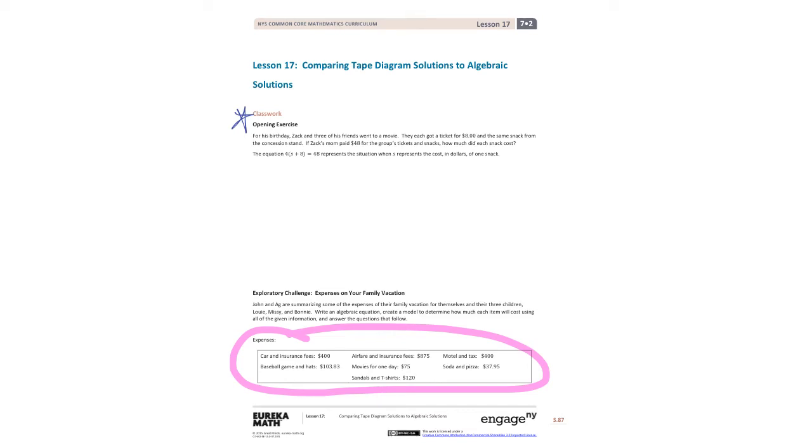Today we are doing lesson 17 in the second half of the module. I will tell you up front we won't be doing all the lessons in the second half of the module, just the ones that are most important. Some of them are kind of redundant and repeating things. So we're going to start out with the opening exercise. For his birthday, Zach and three of his friends went to a movie. They each got a ticket for $8 and the same snack from the concession stand. If Zach's mom paid $48 for the group's tickets and snacks, how much did each snack cost?